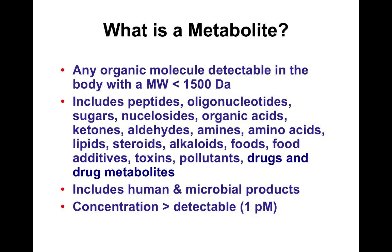There's debate about what is a metabolite — there probably never will be perfect clarity. Generally, we include all small molecules, mostly organic molecules, though metal ions are also important. We use a cutoff of about 1,500 daltons, some use 2,000. At that level, it includes some peptides, short DNA and RNA fragments, but mostly things we consider metabolites: sugars, nucleosides, organic acids, amines, and amino acids.